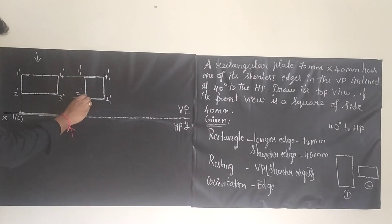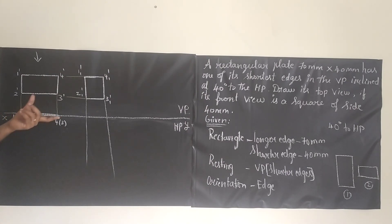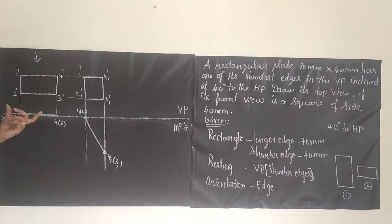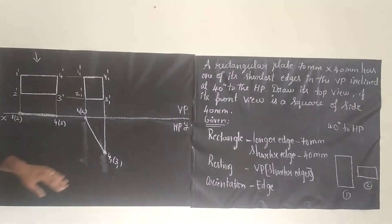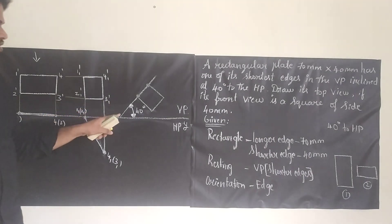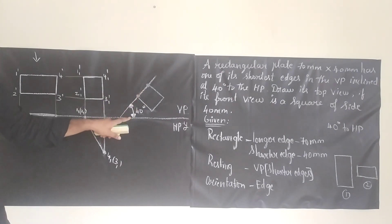If you extend these lines and measure the length using your scale, keep the line as it is so it fits between the two extended lines. Or take your compass, measure the line length, keep the compass point here, and cut down the external line. After cutting, you can erase the unwanted portion. Next, we are going to incline this line to 40 degrees. They have clearly given that it is inclined 40 degrees to HP — that is, the shorter edge is inclined at 40 degrees to HP. So we draw the line at 40 degrees with reference to the axis.